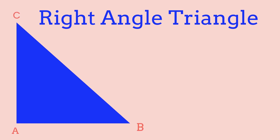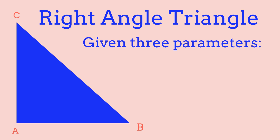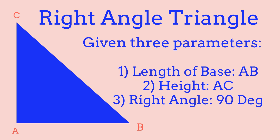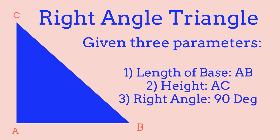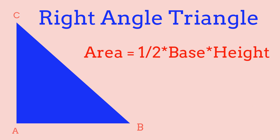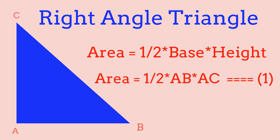We're going to allow the user to input three parameters into our program. The three parameters are: the length of the base, otherwise known as side AB, then the height, or side AC, and also the angle of 90 degrees. With these three parameters, we'll be able to find the area. To calculate the area of a right angle triangle, we do one half times base times height, or one half times side AB times side AC. This is the first formula we'll use.